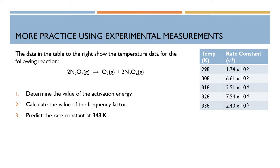I'm going to rewrite that in the form of ln(k) equals negative Ea over R — this is my slope — times 1 over T, this is the x, plus ln(A), that's the b. So it's in the y equals mx plus b form.